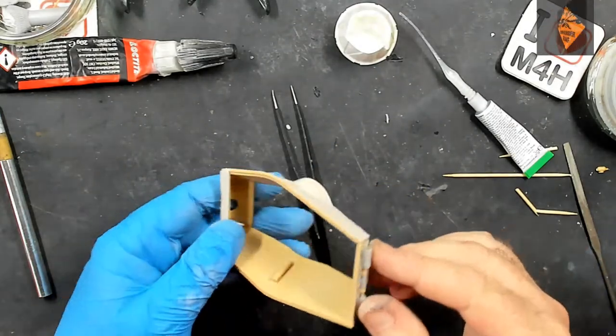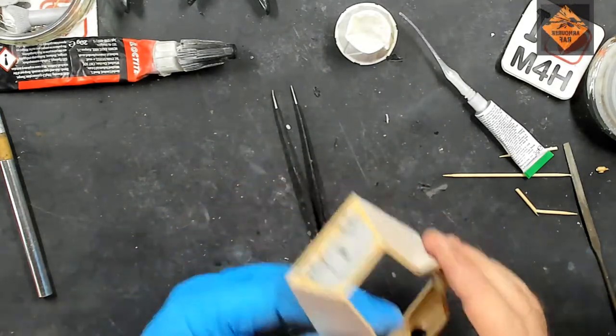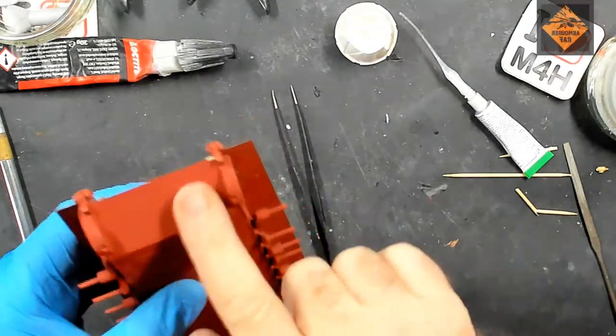There we go, that's the Zimmerit on the turret done. Now for the lower glacis on the hull.